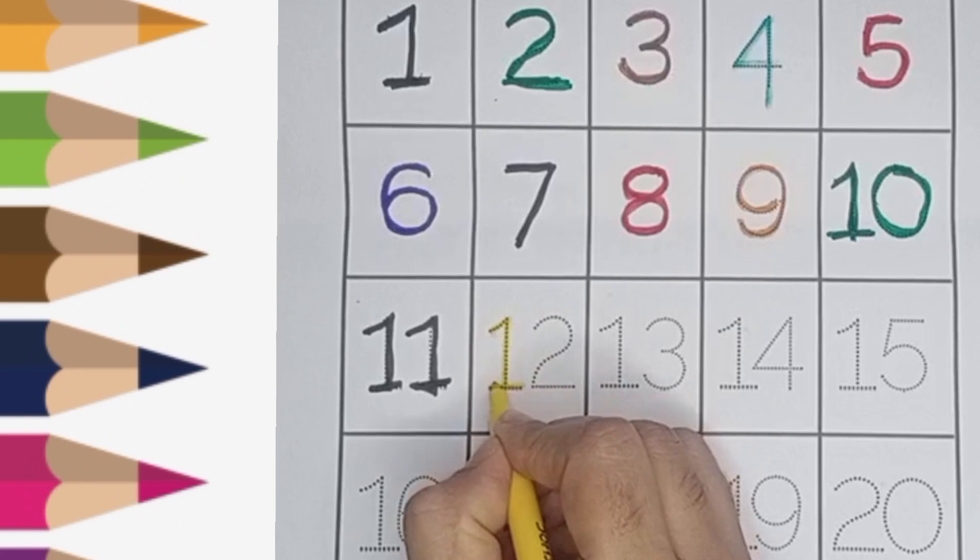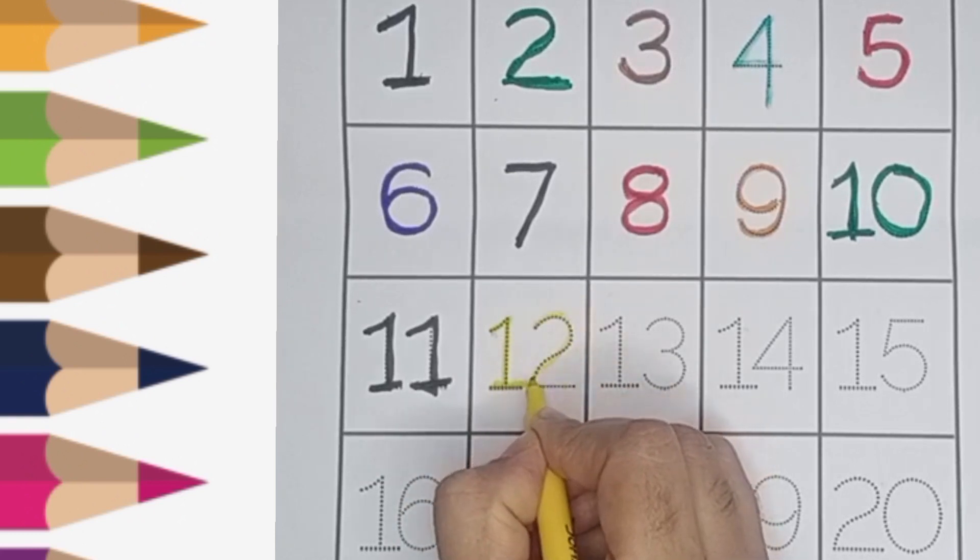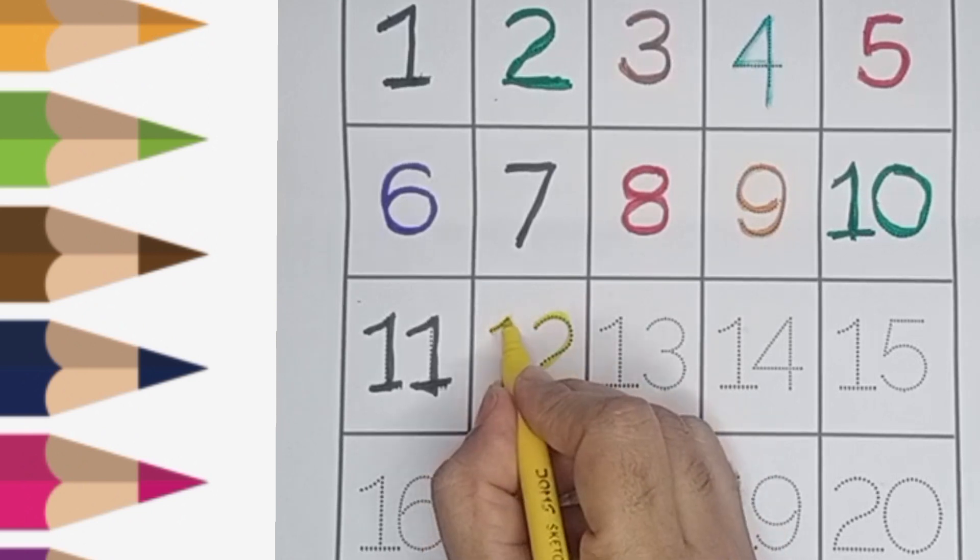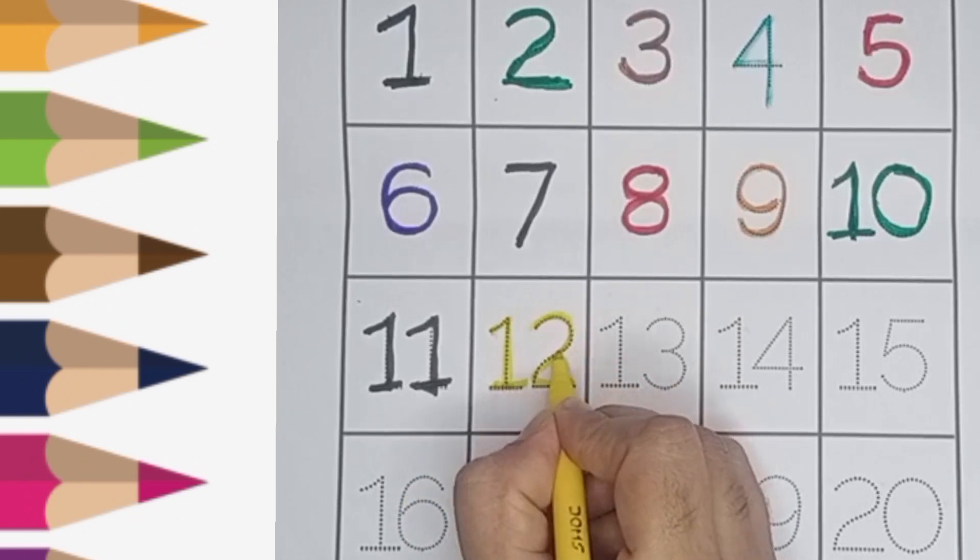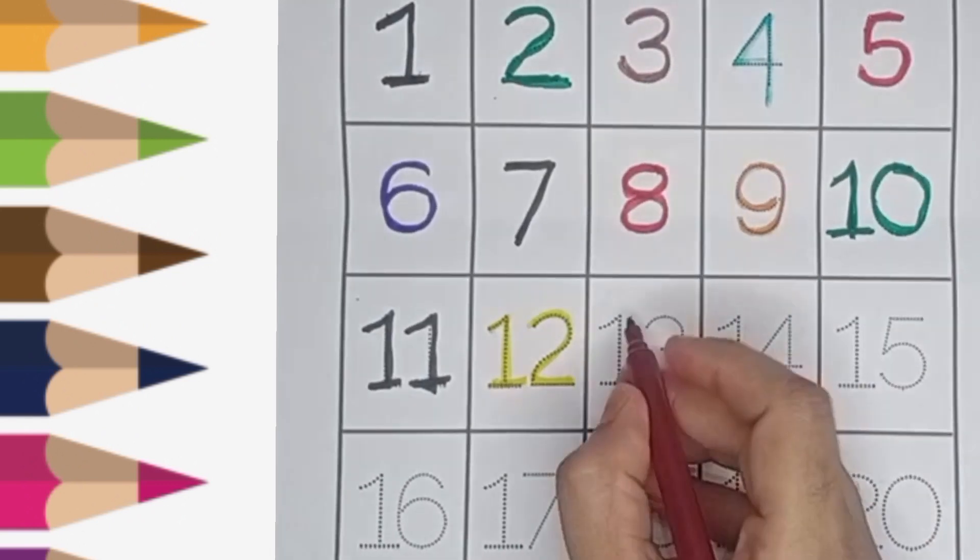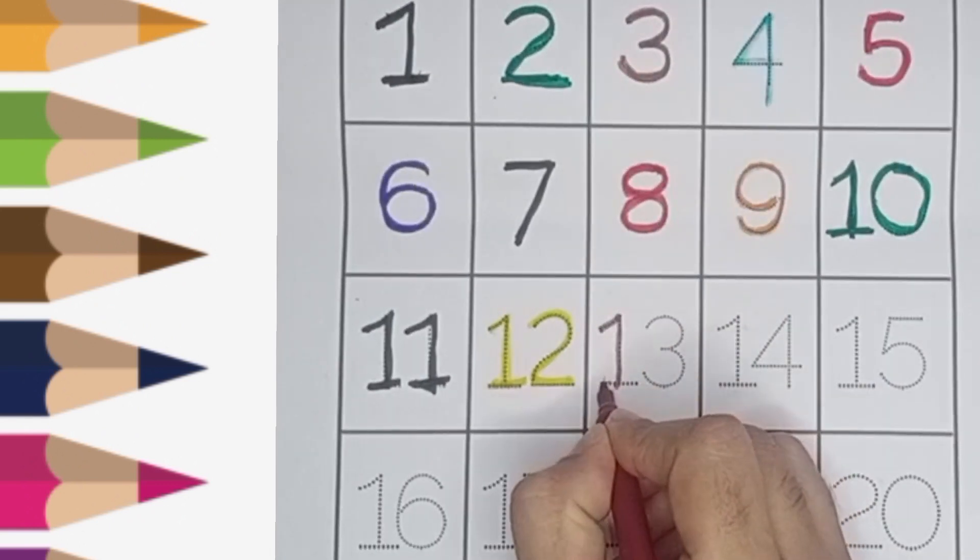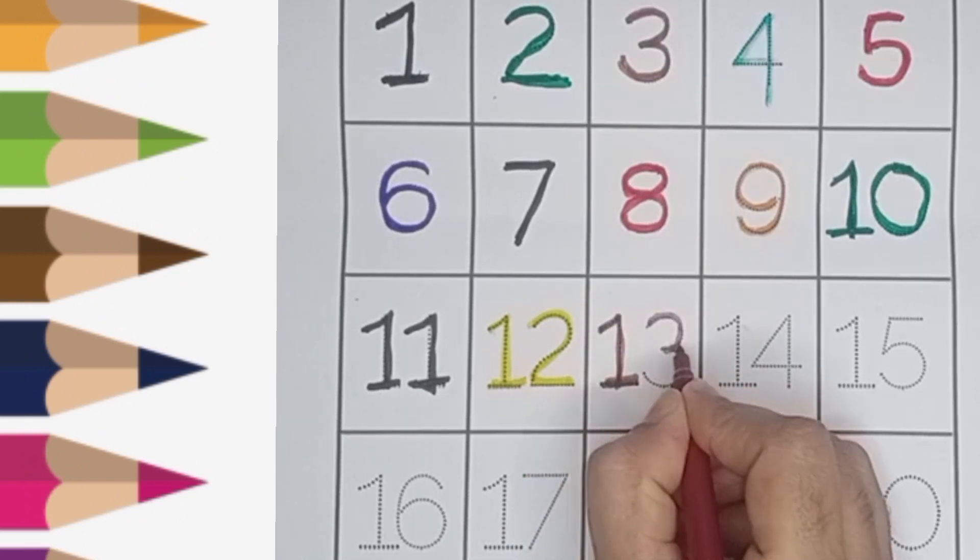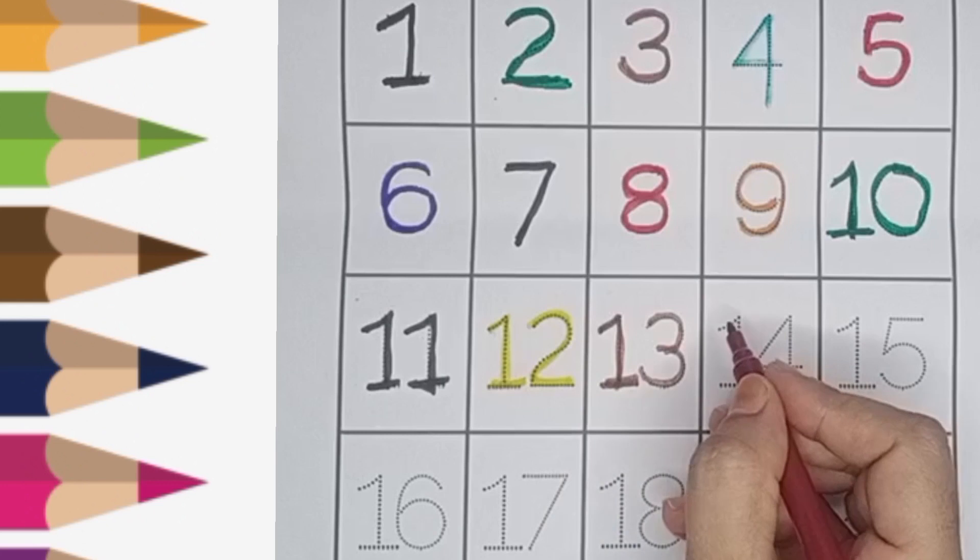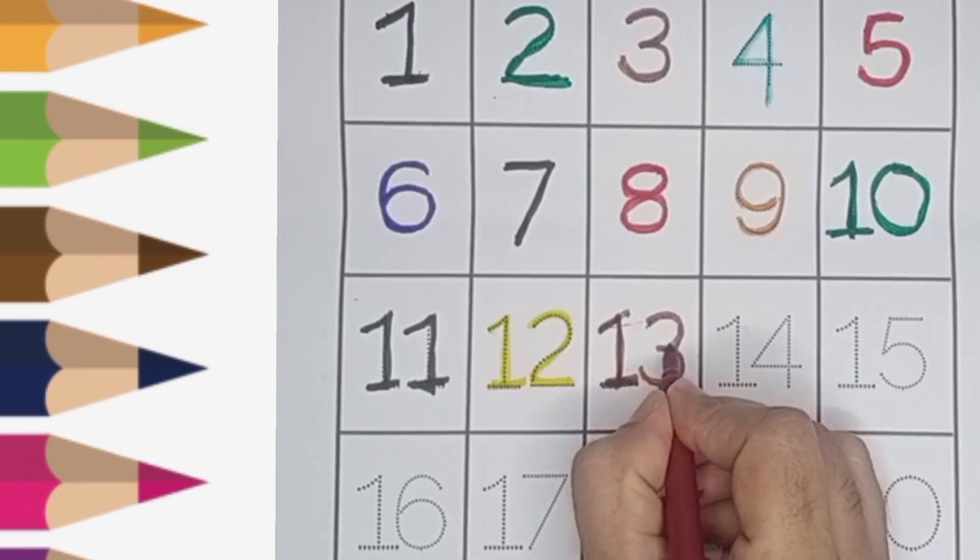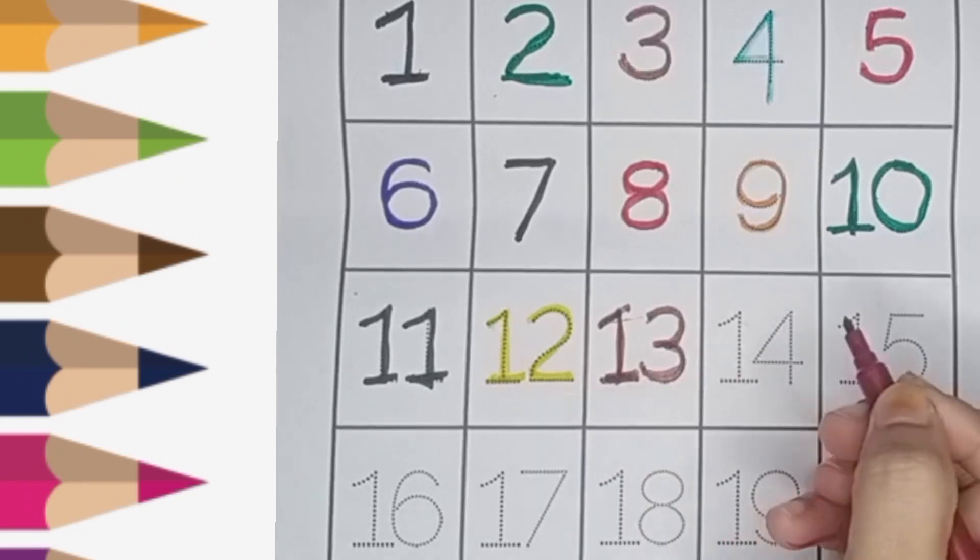One, two, twelve. One, two, twelve. One, two, twelve, brown color. One, three, three, thirteen, three, three.